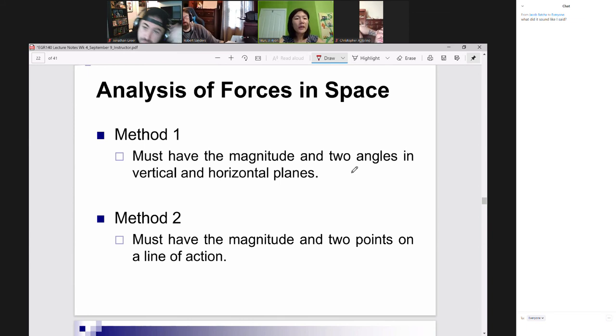So for method one, that's the first one that we're going to talk about for force resolution. You have to have the magnitude of the force, and you have to have two angles, one in the vertical plane and horizontal plane. And I forgot to mention one more here. What else do you have to have? Your projection line. We need to have that. You need to have a projection line for each force.